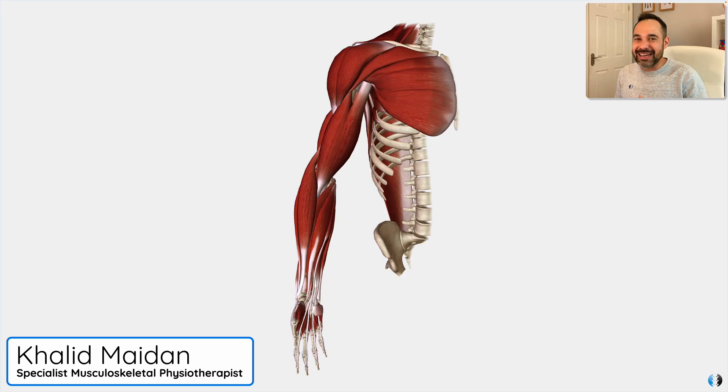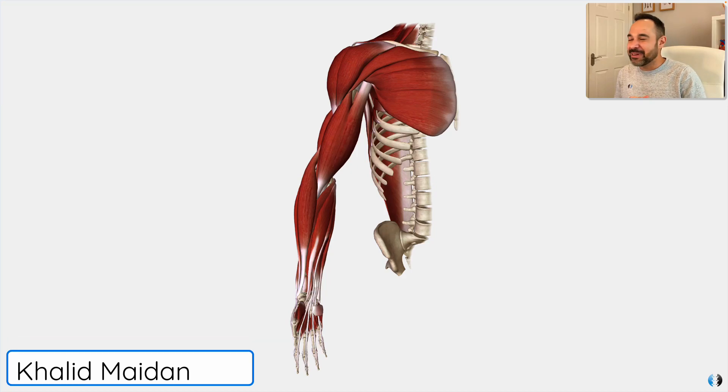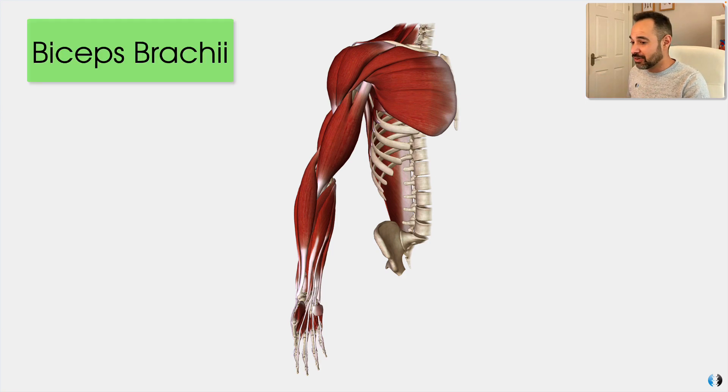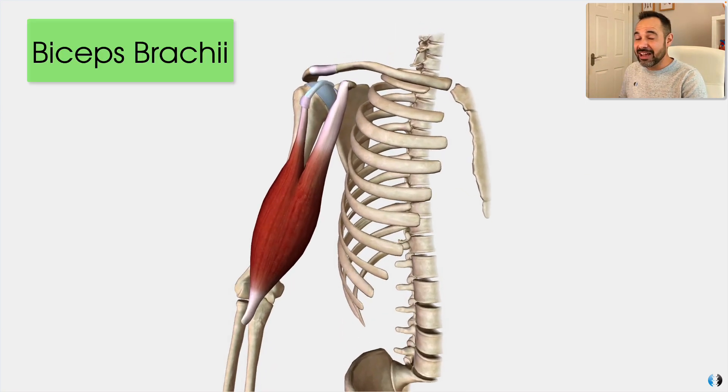If there's one muscle that we get asked about all the time and is super crucial to upper limb function, it's the biceps brachii muscle. Let's dive into our 3D anatomy model to show you what it's all about. Hey guys, Khalid here. Welcome back to Clinical Physio. Let's dive into our 3D anatomy model to talk all about the biceps brachii muscle, starting with its name.